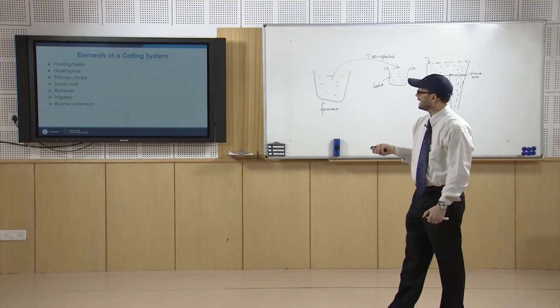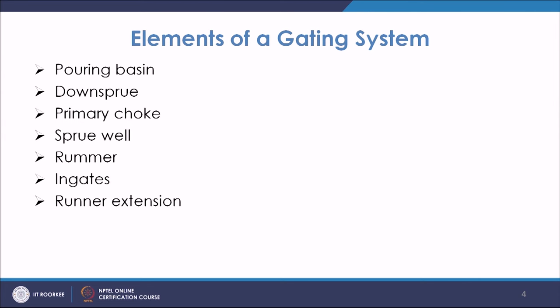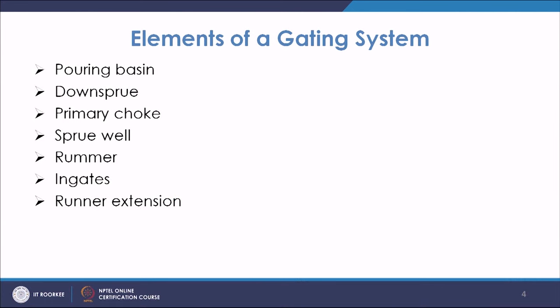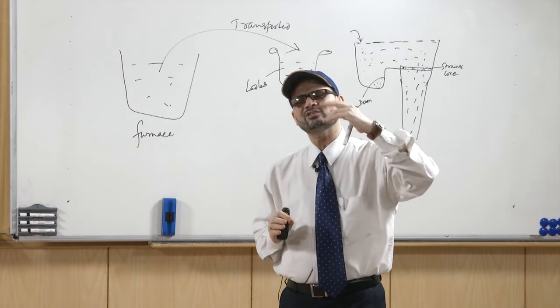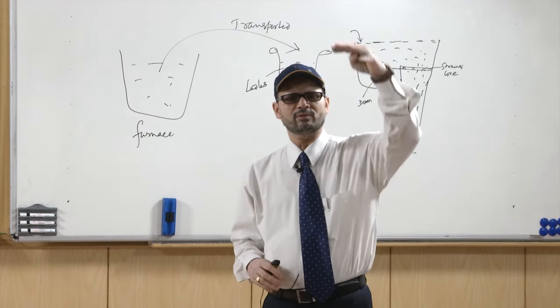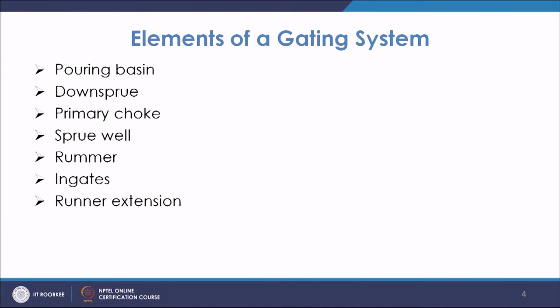So you have these different elements of the gating system: the pouring basin, the sprue (also known as down sprue), a choke which is the minimum cross-sectional area in the channel that controls the pouring rate — it is normally at the bottom of the sprue — the sprue well which adjusts the momentum of the incoming fluid falling from a certain height, the runner, the ingates, and the runner extension.